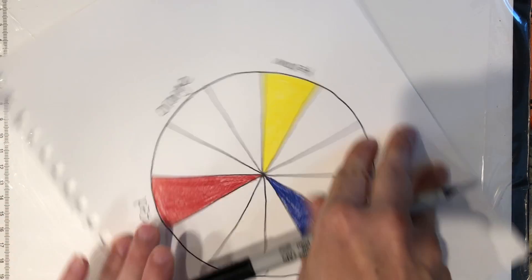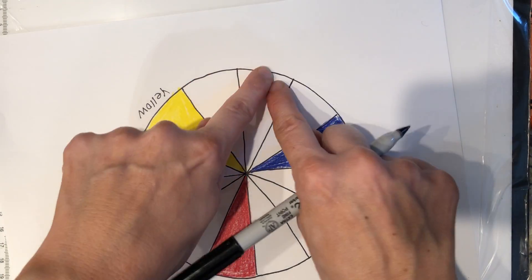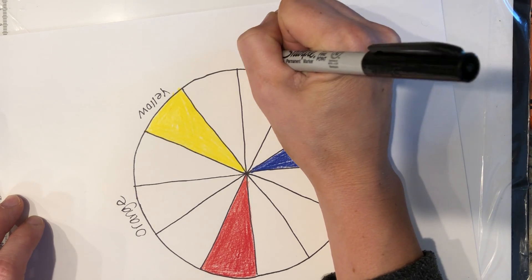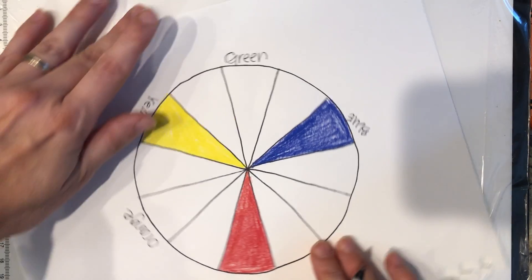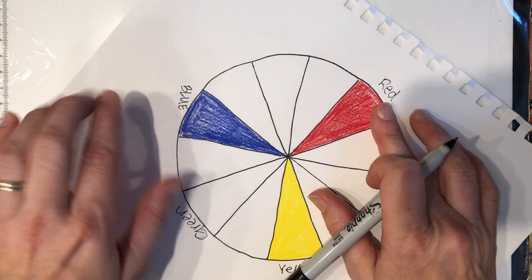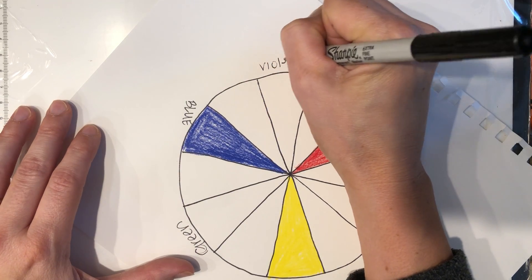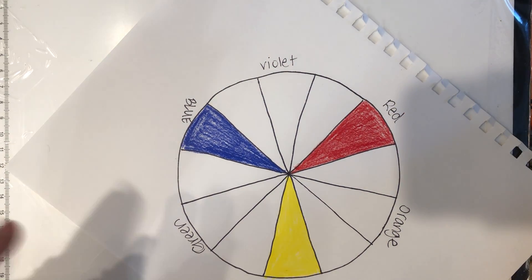I'm going to turn my wheel. Between yellow and blue, equidistant is this one, and that's green. If you broke it down, green is actually blue-yellow. Then turn it once more. Between red and blue is violet. We also know violet is purple, but violet would also be red-blue. So that's our secondary color.